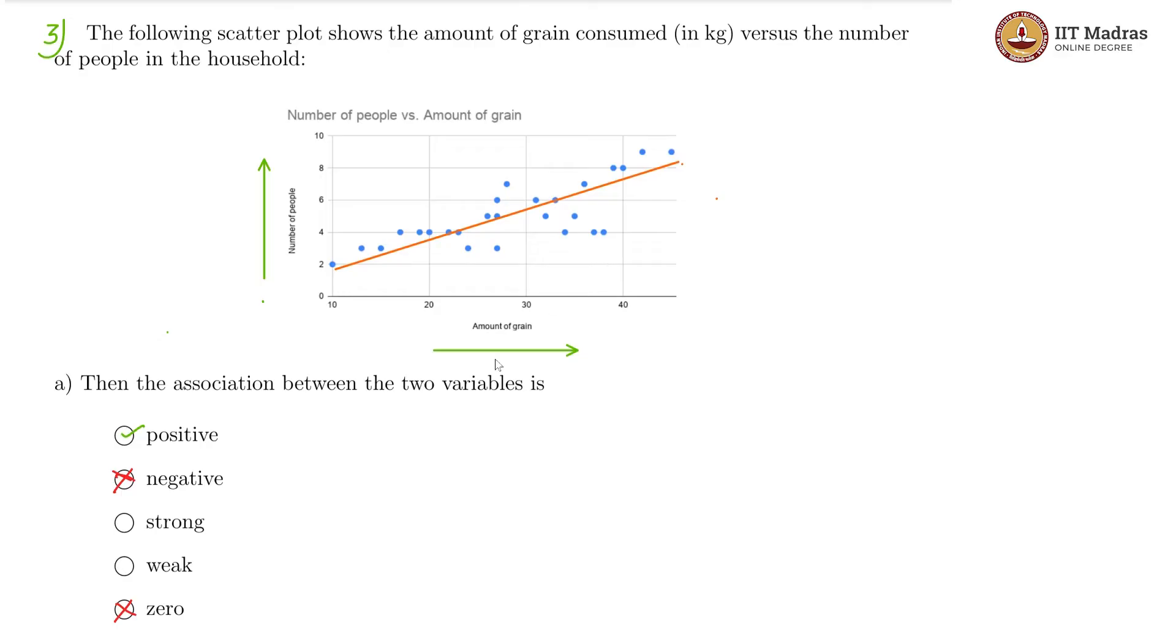and this would indicate a fairly strong association between the variables. It is not weak definitely because as the amount of grain is increasing, the number of people is also increasing.